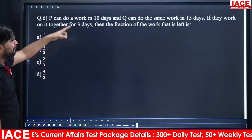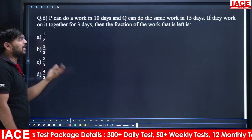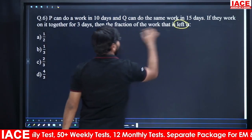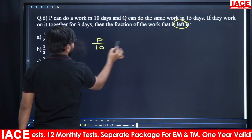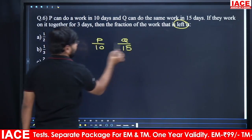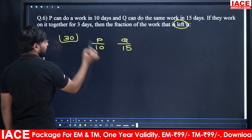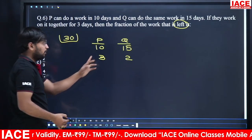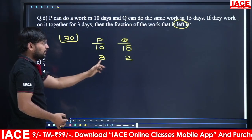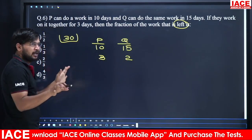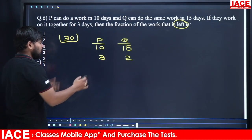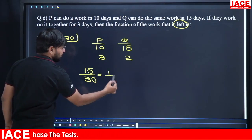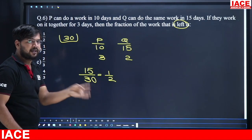P can do a work in 10 days, Q in 15 days. LCM is 30, so total work = 30 units. P's per-day work = 3 units, Q's per-day work = 2 units. Together per day = 5 units. In 3 days they complete 15 units. Remaining = 15 out of 30 = 1/2. The fraction of work remaining is 1/2.